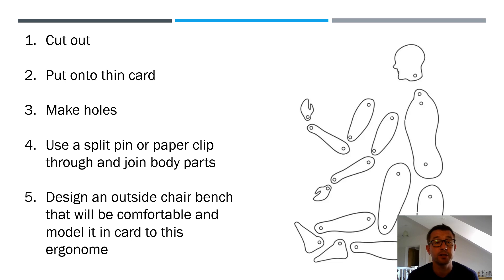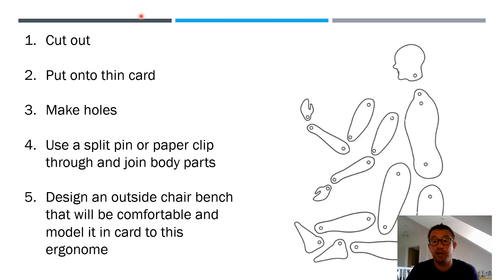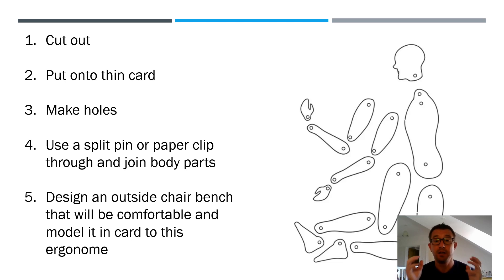An extension task: make an ergonome. Ergonomes are used to see how people move and work. You cut around a template, put it onto thin card, make holes, and use split pins or paper clips to join the body parts. Then design something that fits this card comfortably — it could be a chair, a bench, an outdoor table and chairs — your choice. Make it in card or model form. Hopefully you're now clear on the difference between ergonomics — how people interact with their designs and products such as a computer mouse — and anthropometrics — which is about body sizes, shapes, and data. Keep going with design technology and we'll see you in the next session.